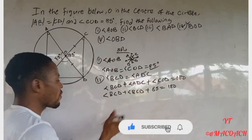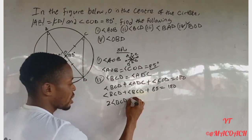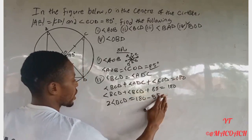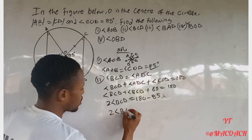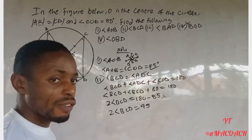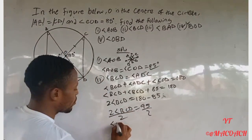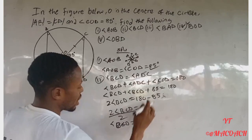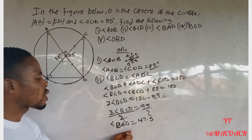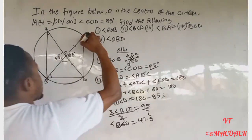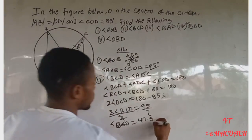Taking 85 to the other side: 2 × angle BCD equals 180 minus 85, which gives 95. Dividing both sides by 2, angle BCD equals 47.5°. So our angle C here is 47.5°. Question two is done.